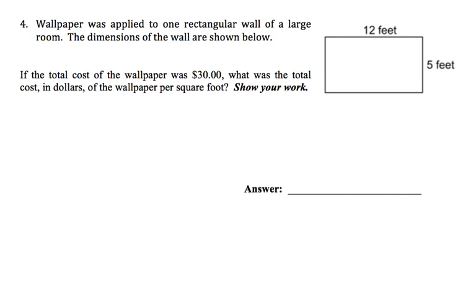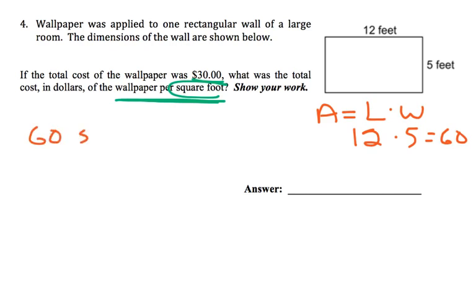Number 4 says, wallpaper was applied to one rectangular wall of a large room. The dimensions of the wall are shown below. Alright. If the total cost of the wallpaper is $30, what was the total cost in dollars of the wallpaper per square foot? Alright, so square foot, area is measured in square foot. So let's start by finding the area of this rectangle, which is just length times width. So that would be 12 times 5, or 5 times 12, same thing. Gives us an area of 60 square feet. And then we know that to put wallpaper on this wall, this is me putting wallpaper, it cost a total of $30.